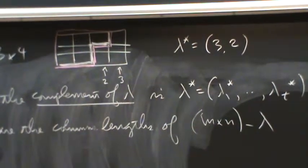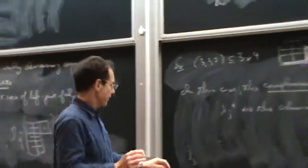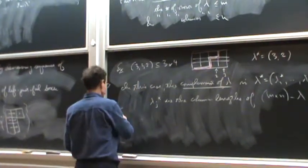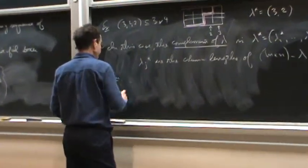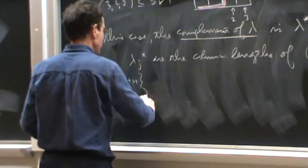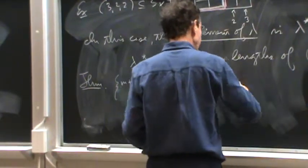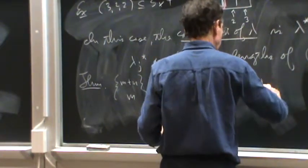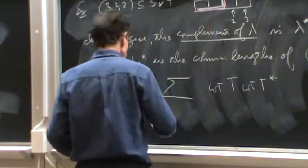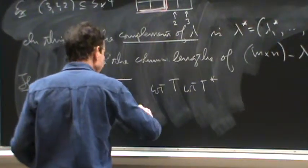Okay, everybody comfortable with what the complement means? Okay, now we're done. We have all the definitions. We just need to state the theorem. So, this guy is equal to the sum of weights of tilings, actually pairs of tilings.